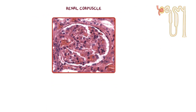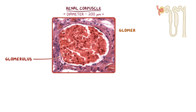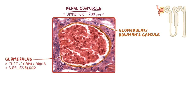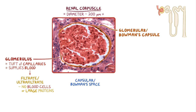Each nephron starts with a renal corpuscle, which is a spherical structure in the cortex that has a diameter of about 200 micrometers. The corpuscle consists of the glomerulus as well as the surrounding double-layered epithelial capsule called the glomerular or Bowman's capsule. The glomerulus is a bundle or tuft of capillaries that supplies the blood that's filtered to become a fluid called the glomerular filtrate or ultrafiltrate, which typically contains no blood cells or large proteins. The ultrafiltrate initially drains into the capsular or Bowman's space, which is the space in between the two layers that make up Bowman's capsule.